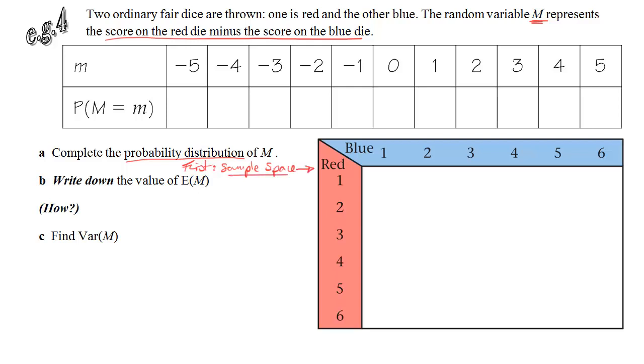For each combination of red and blue values, we need to do the score on the red one minus the score on the blue one. So, one minus one is zero. One minus two is minus one. And so on. One minus three. One minus four. One minus five. One minus six. This could get a little bit tedious. Two minus one. Two minus two. Let's speed it up. You get the idea. And you can fill this in quite quickly following the patterns. Anyway, that will inform my probability distribution.